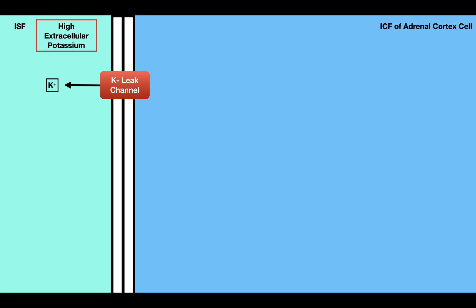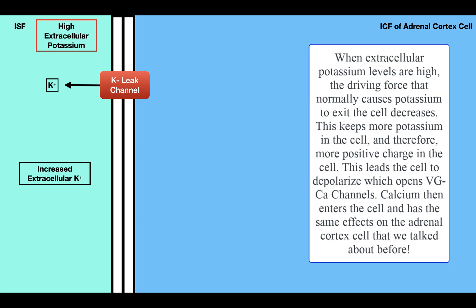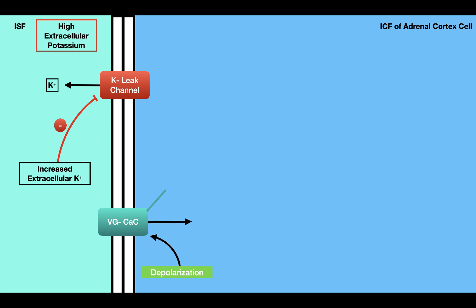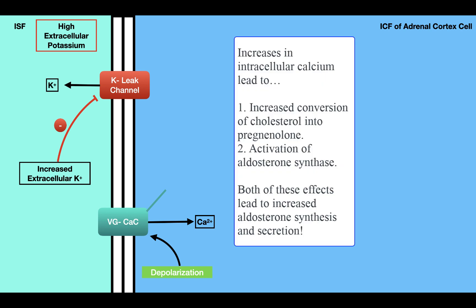When we have high extracellular potassium, this decreases the electrochemical gradient for potassium across the plasma membrane, inhibiting the movement of potassium out of the cell. As a result, less positive charge leaves the cell, causing the plasma membrane to depolarize. This depolarization opens voltage-gated calcium channels, allowing calcium to flow into the cytosol. Calcium then has the same effects described for angiotensin 2, so the overall effect of high extracellular potassium is to stimulate aldosterone synthesis and secretion.